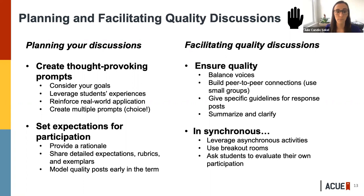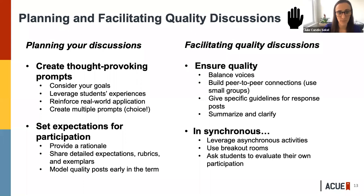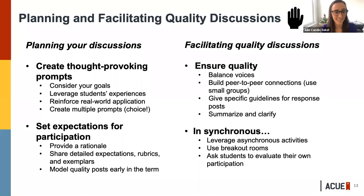It may be overwhelming for a student to post or speak out when there are 100 or 400 attendees, so getting them talking in groups of three to four is helpful. Give specific guidelines for response posts — that could be assigning roles to students, like asking them to play the devil's advocate or find an additional source to support what a peer is saying. The last thing is to summarize and clarify. As instructors, we need to make sure we summarize what happened in the forum so students know what the takeaway should be — we can do this in the form of an announcement, or we can assign that to a student each week.